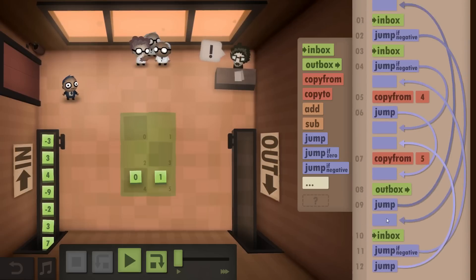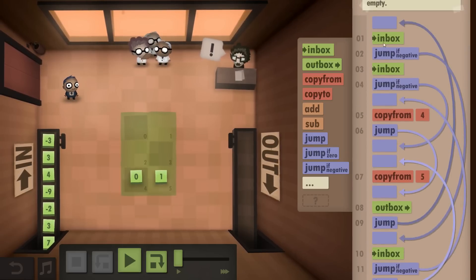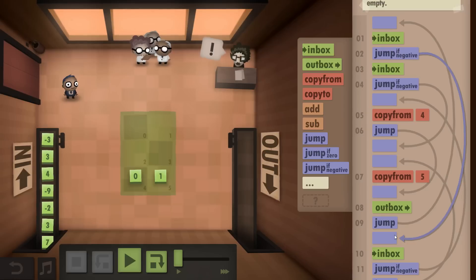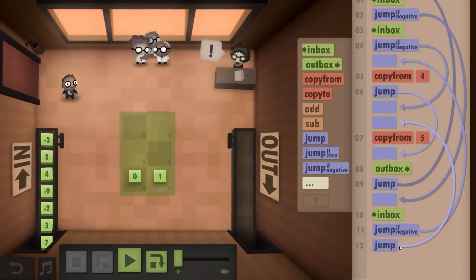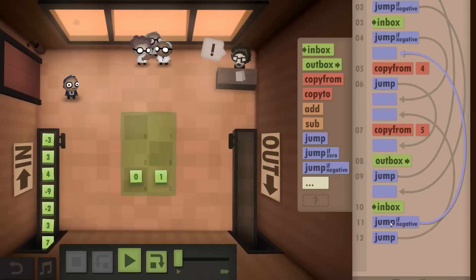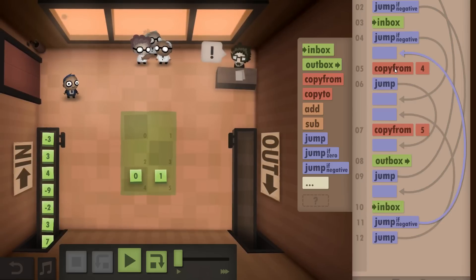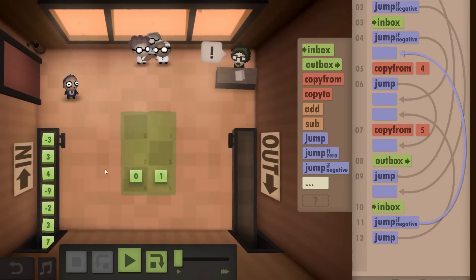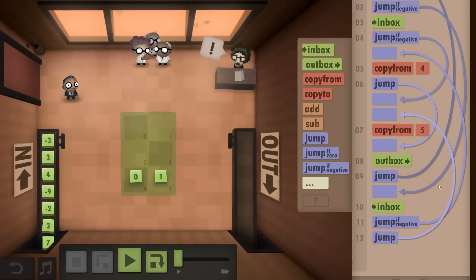Unfortunately I can't even fit it on one screen. So, you take from the Inbox, if it's a negative, you jump down here, check the second thing in the Inbox, if that is also a negative, you copy from 4, which is the 0, so both have the same sign, both negative, copy from 4, 0, put it to the Outbox.